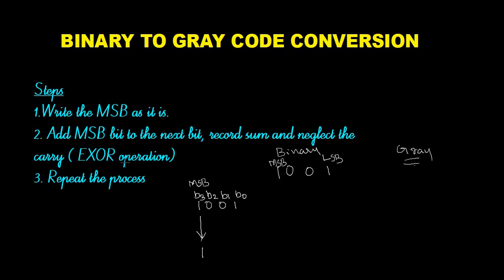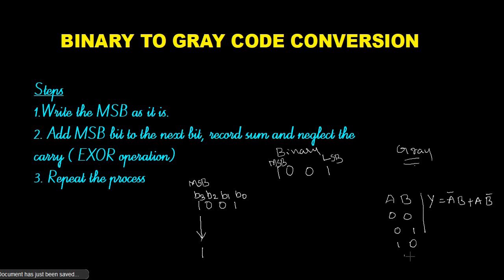That is similar to the XOR operation. We know the XOR function — considering two inputs A and B, the XOR output Y is equal to A-bar·B plus A·B-bar. The XOR truth table: 0 XOR 0 = 0, 0 XOR 1 = 1, 1 XOR 0 = 1, 1 XOR 1 = 0. That is, if the number of ones is odd then the output is high.